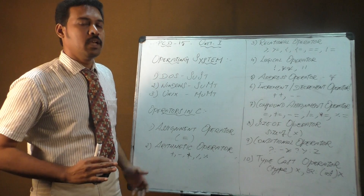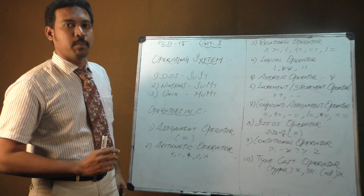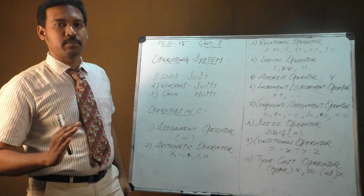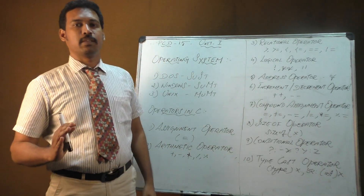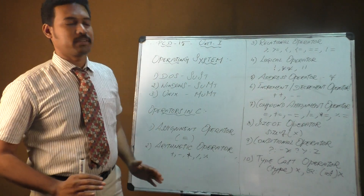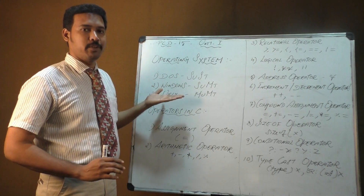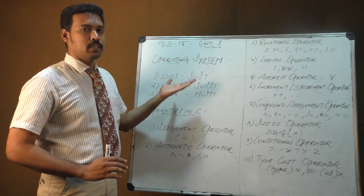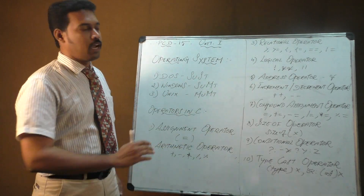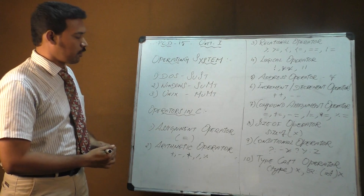The third type of operating system is UNIX. UNIX follows the concept of multi-user, multi-task. So the three major categories are: DOS — single user single task, Windows — single user multi-task, and UNIX — multi-user multi-task.